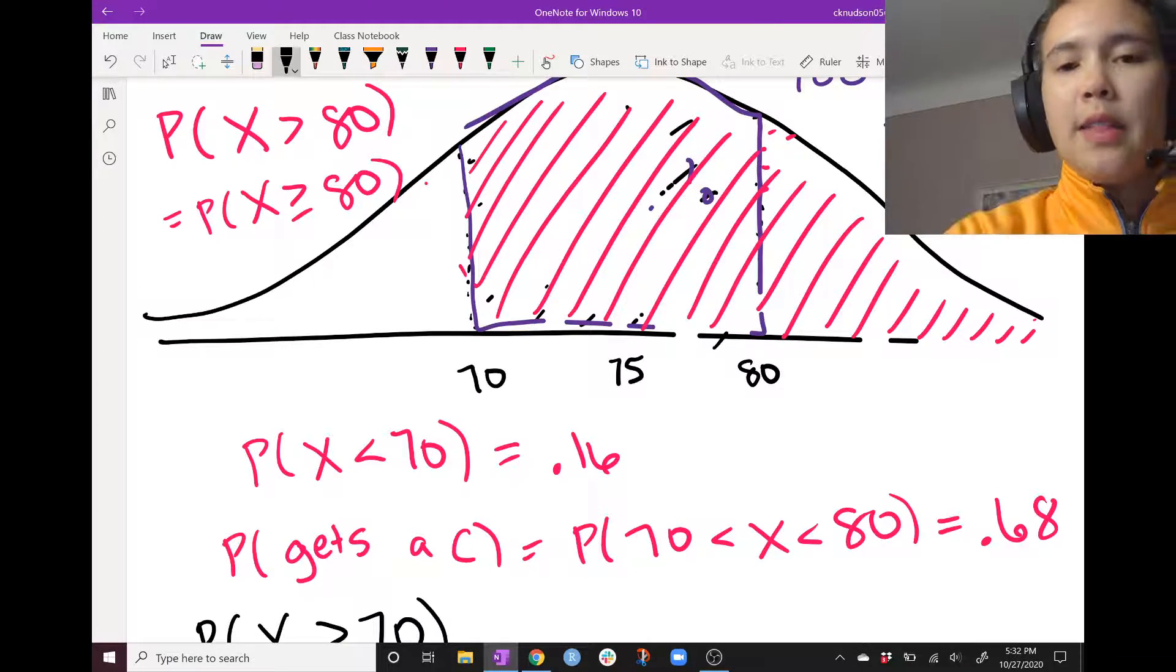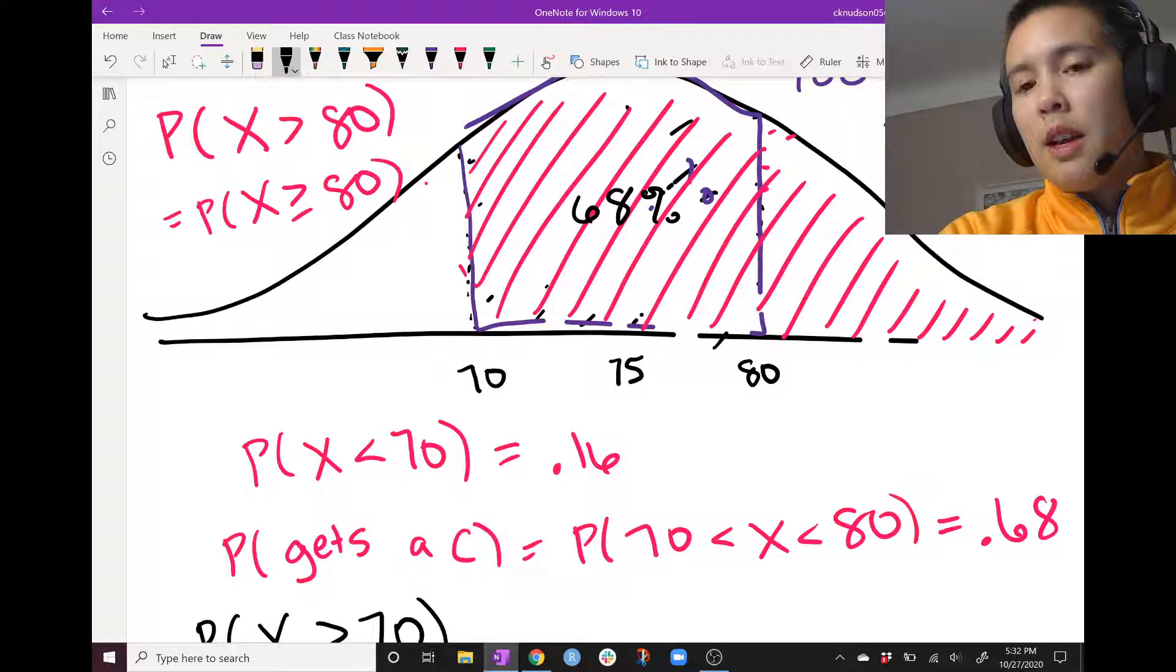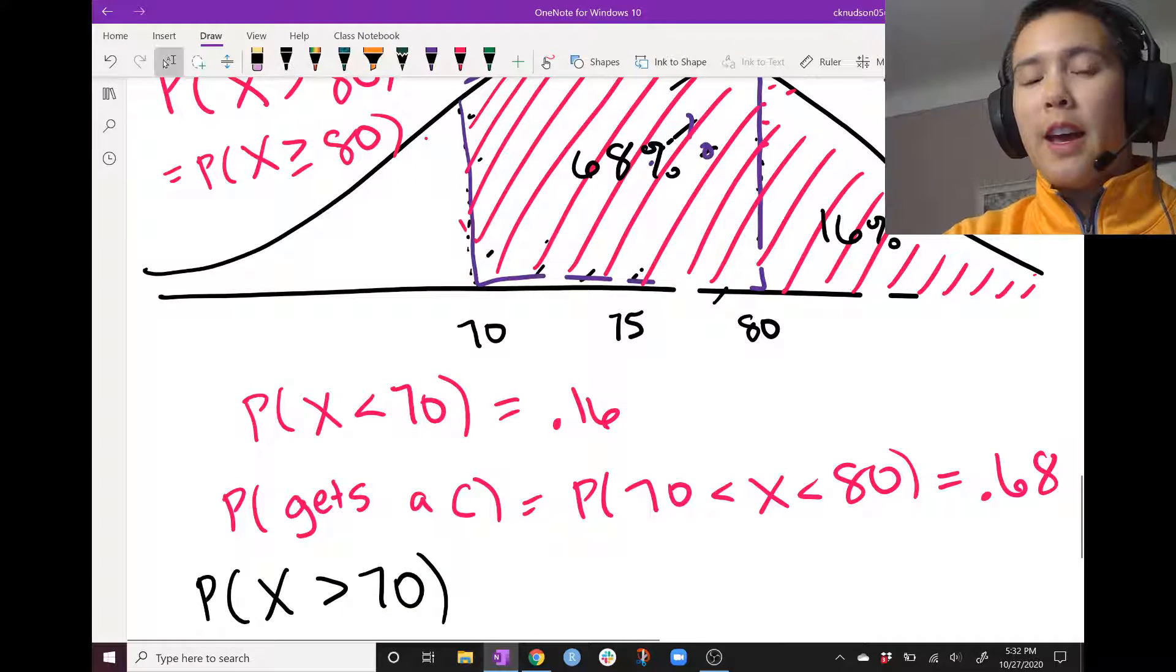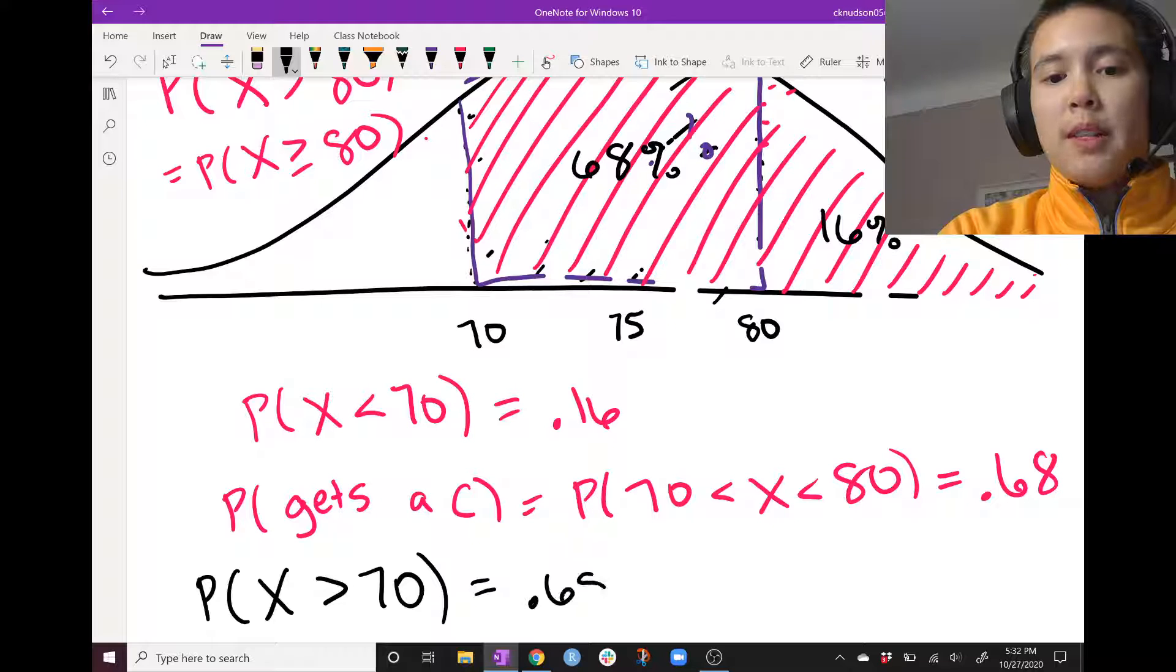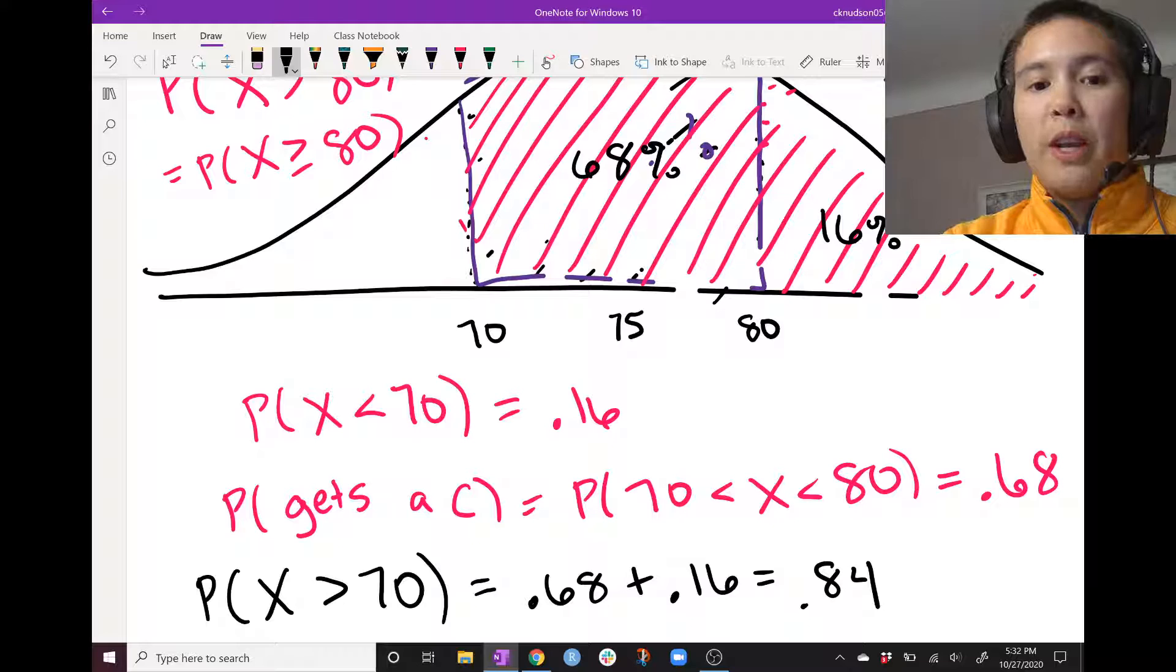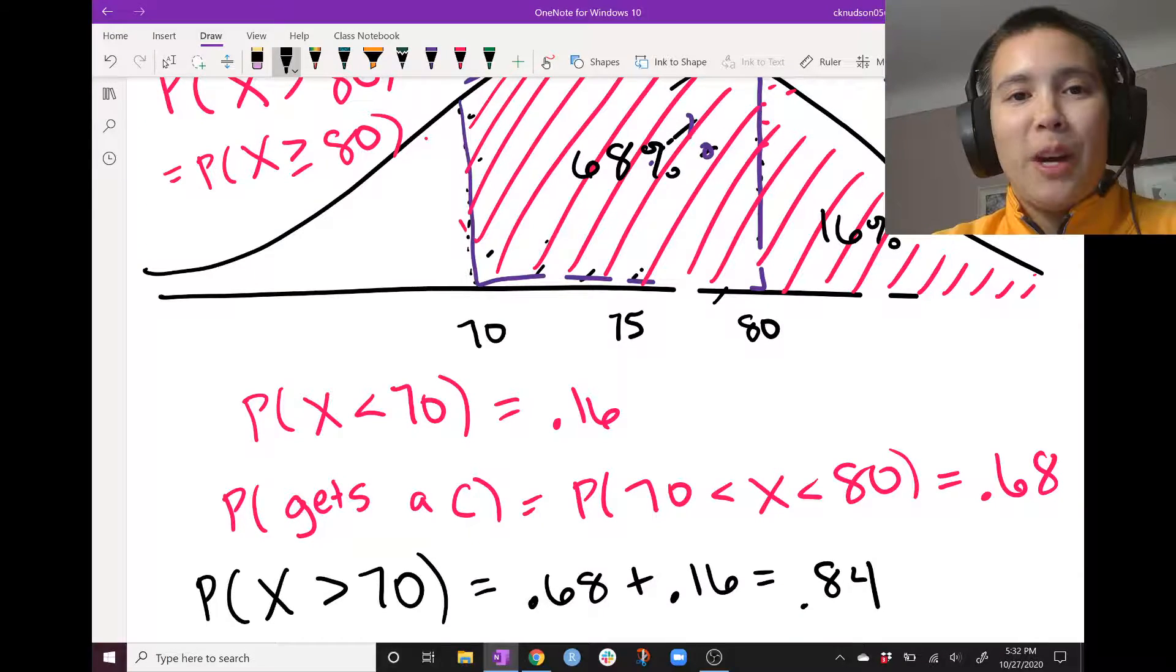And earlier we said that this was 68% and this was 16%. Therefore, the probability that X is greater than 70 is 0.68 plus 0.16. So 0.84. So about 84% of the students will get a lollipop.